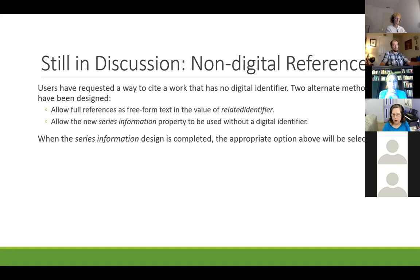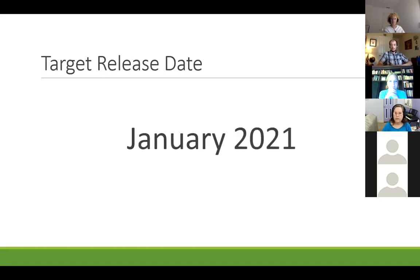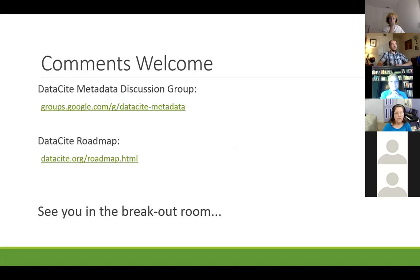If we can find a way to solve all three of these problems in a backwards-compatible way, we will do that with the 4.4 schema. It's not entirely clear that we can hit all of them, but I've presented them in priority order — series information will certainly be there and we will see what we can do with the rest. The target date for the release is January 2021, which is why November will be the 'fish or cut bait' point for the series information object. As always, your comments, suggestions, and feedback are very welcome.